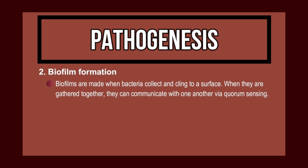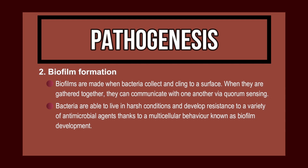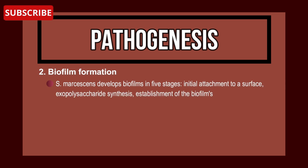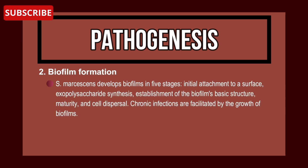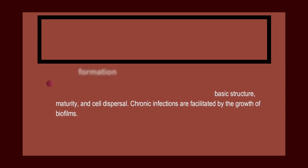Regarding biofilm formation: biofilms are made when bacteria collect and cling to a surface and communicate with one another through quorum sensing. Thanks to multicellular behavior such as biofilm development, bacteria can live in harsh conditions and develop resistance to antimicrobial agents. Serratia marcescens develops biofilms in five stages: initial attachment to the surface, exopolysaccharide synthesis, establishment of basic biofilm structure, maturity, and cell dispersal.